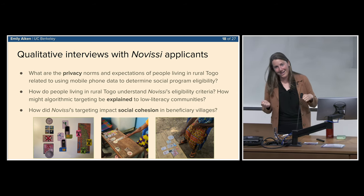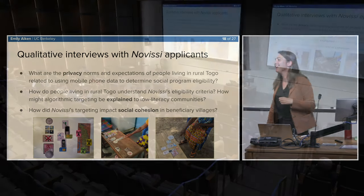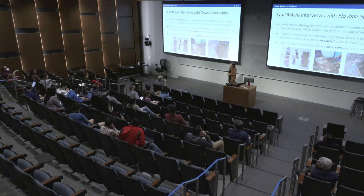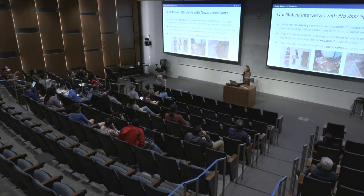On whether people challenged the eligibility criteria or proposed alternatives: we didn't get deeply into that in this study, though it's something I'd love to study more. I'm also interested in developing meaningful methods of recourse — even if we commit to the phone data approach, can we create mechanisms so people who feel incorrectly classified have a genuine opportunity to appeal? That feels like a smaller but important version of the broader question.